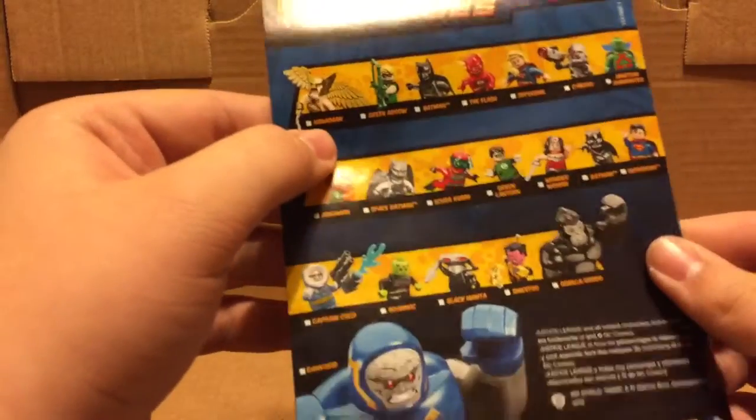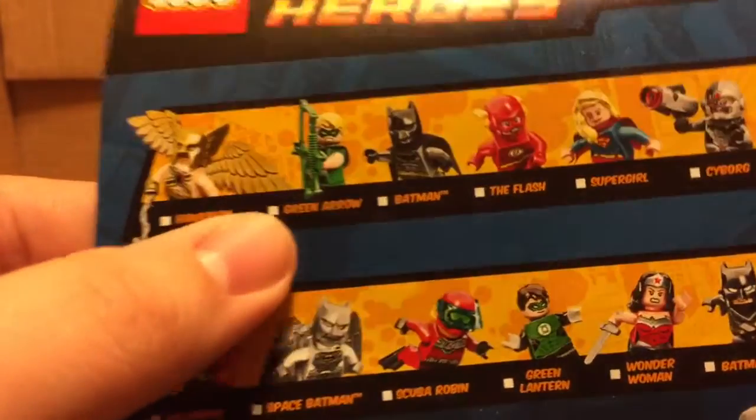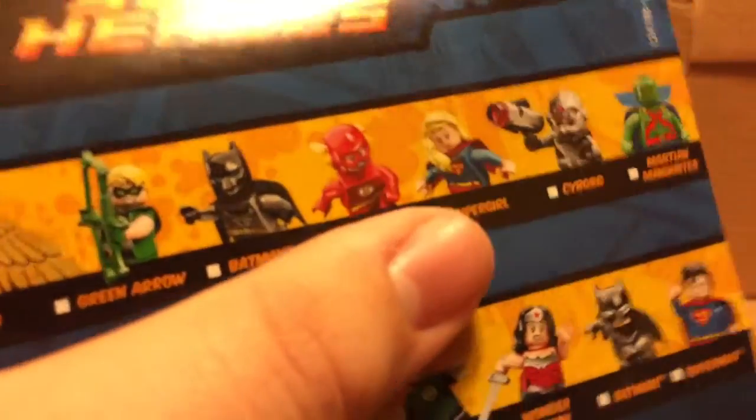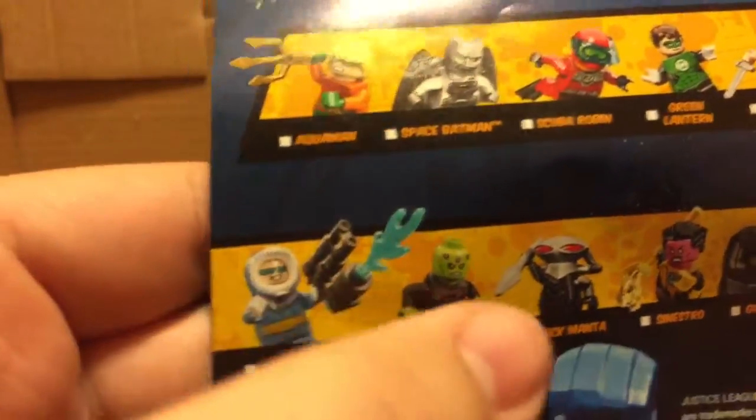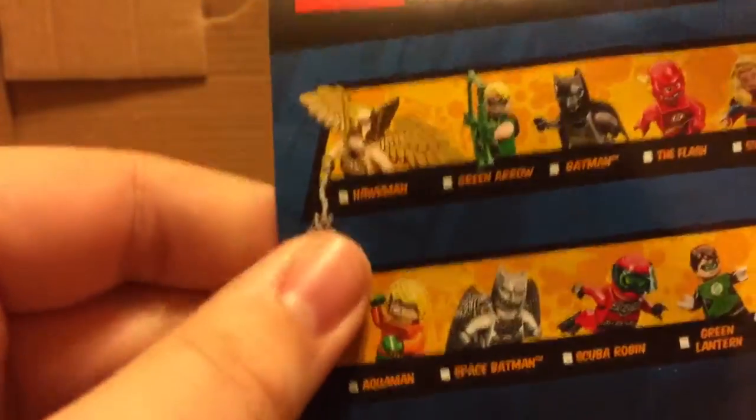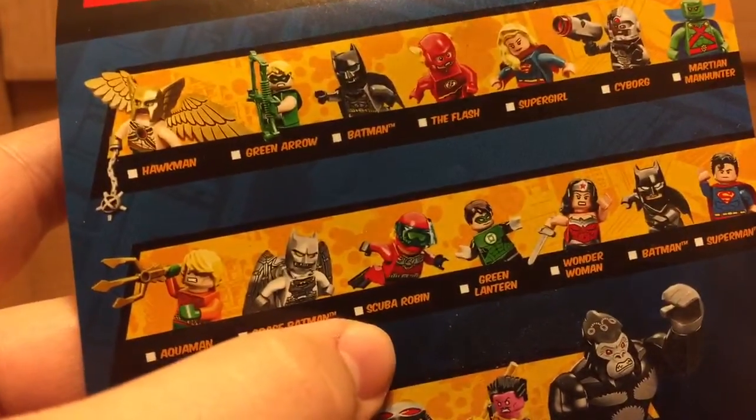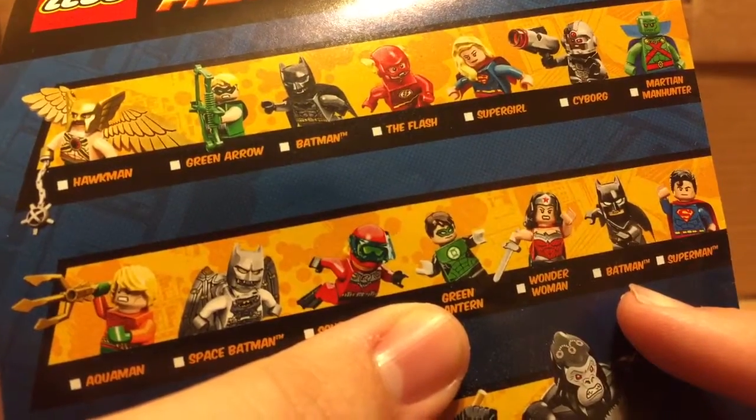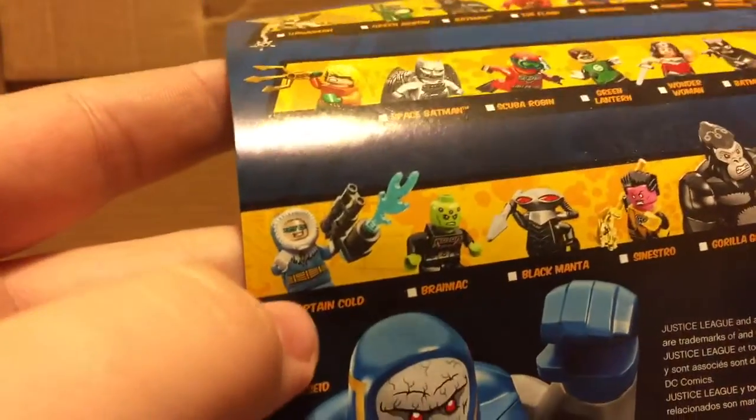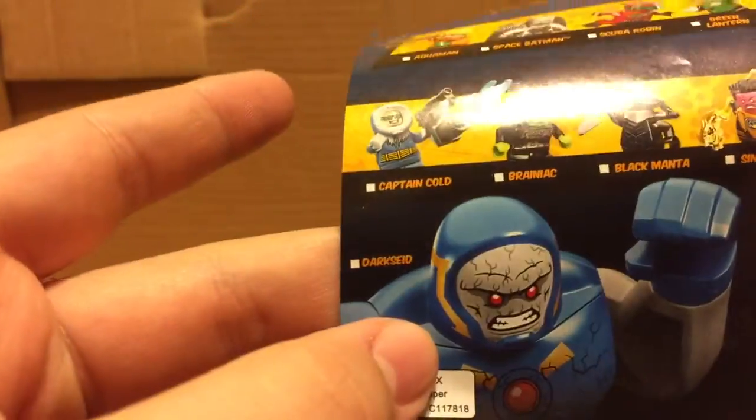And then on the back here, you got your DC LEGO DC Comics Superheroes Checklist, where you can check off all the different superheroes that you have. Let me zoom in for this. You got Hawkman, Green Arrow, Batman, The Flash, Supergirl, Cyborg, Martian Manhunter. Supergirl, Martian Manhunter, and Brainiac are part of a set that came out earlier that I don't think you can buy in stores. Aquaman, Space Batman, Scuba Robin, Green Lantern, Wonder Woman, another Batman, Superman, Captain Cold, Brainiac, Black Manta, Sinestro, Gorilla Grodd, Darkseid. And that's basically all this is.